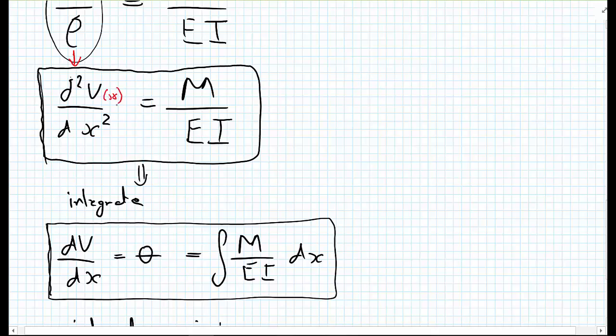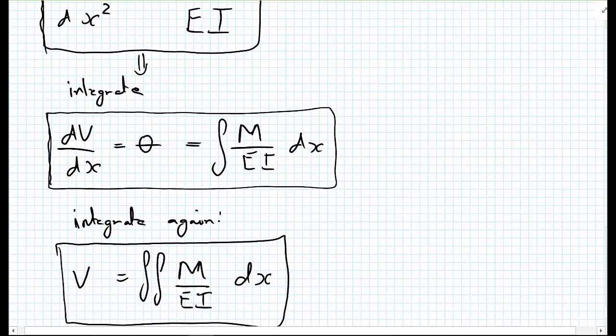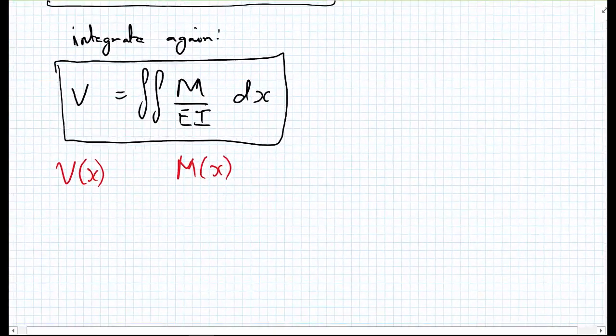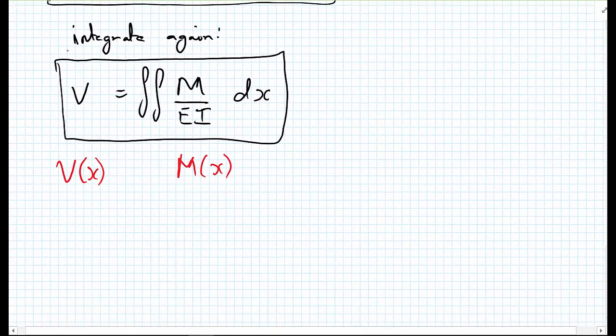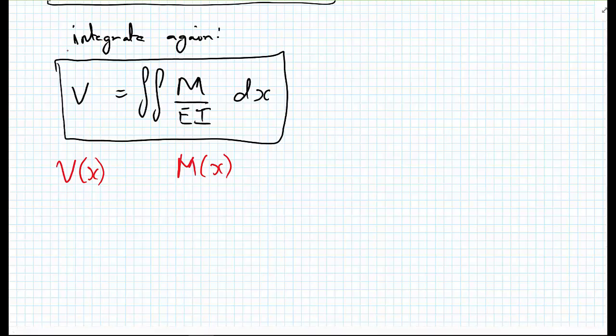So that could be V of x. Integrating this once will get us an equation where we can get the rotations of the beams at any point along the beam and integrating again we can find a formula that we can use to find the deflections of the beam. So in the next video we're going to do an example where we use these formulas to calculate the deflections of a beam and the rotations of a beam and subsequently what the maximum deflection of a beam would be.